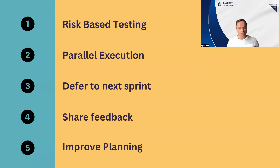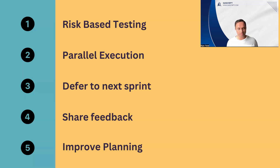The next two points are from a management perspective: sharing feedback and improving the planning process. We need to share proper feedback with our stakeholders and clients — explaining what functionality can be delivered in the current sprint, which high-risk scenarios are being covered, and that the remaining items will be addressed in upcoming sprints. Continuous feedback is very important so that customers and stakeholders are aware of the whole process and the current status of all the stories.